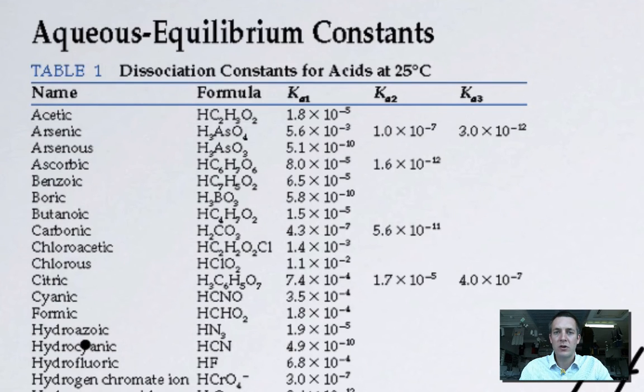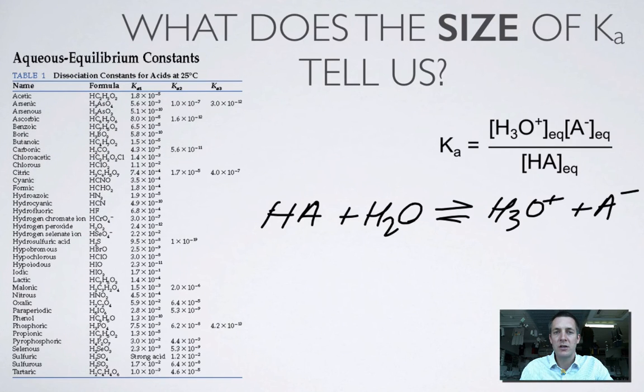what we said about strong acids, was that they ionize completely, or they dissociate completely in aqueous solution, which means that the concentration of HA will be zero. And if you put zero into this expression, then obviously Ka becomes infinity. So anything that is strong doesn't appear in this table, because it doesn't really have a Ka value.